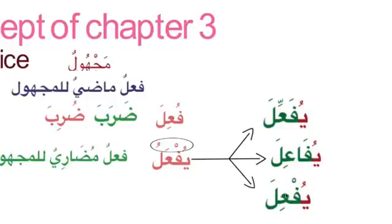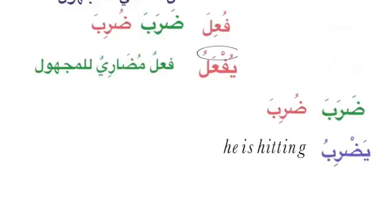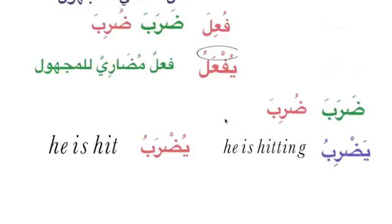Let's bring some examples. Daraba - the maadi lil-majhul is duriba. So if you see yaḍribu, it means 'he is hitting' - the action is not complete. If you want to make it majhul, following the pattern of yuf'alu, it will be yuḍrabu. So what does yuḍrabu mean? He is hit - turning into a passive sentence. We don't know who is hitting, but he or it is hit.